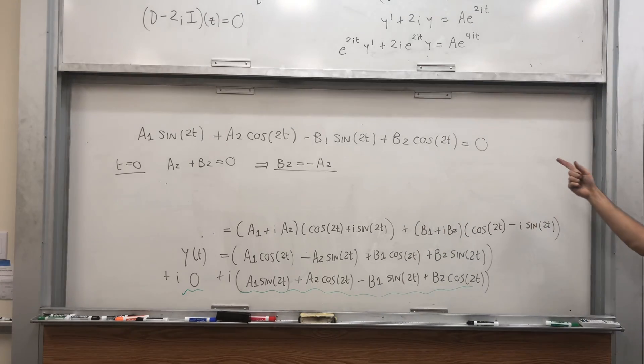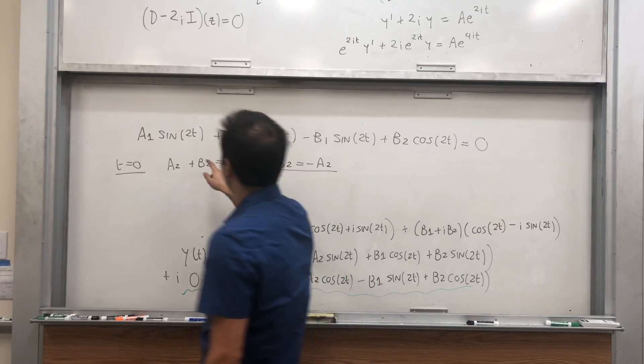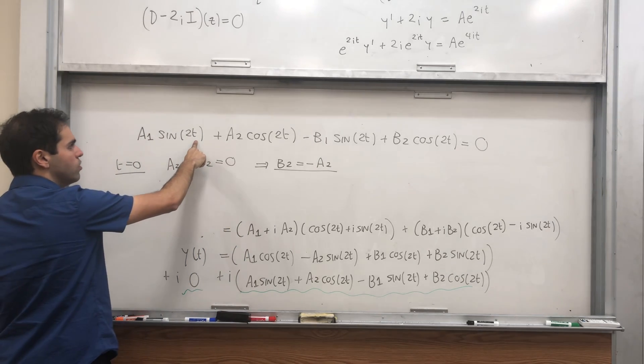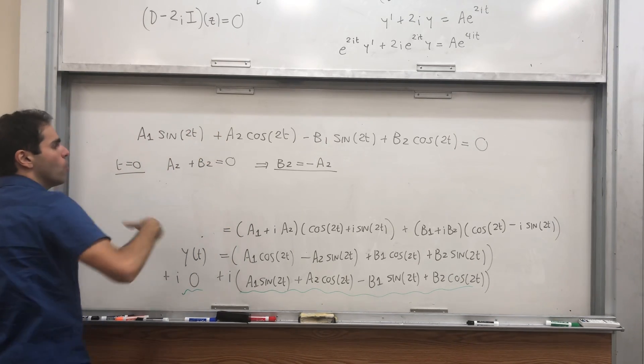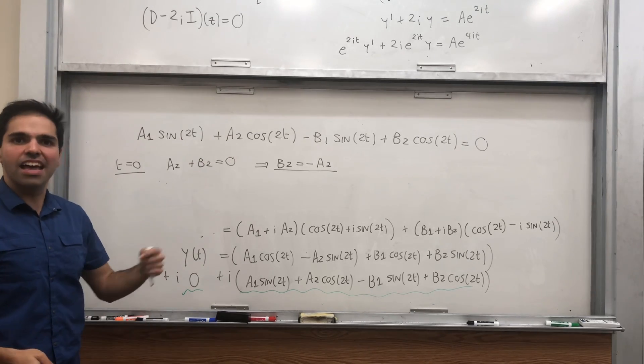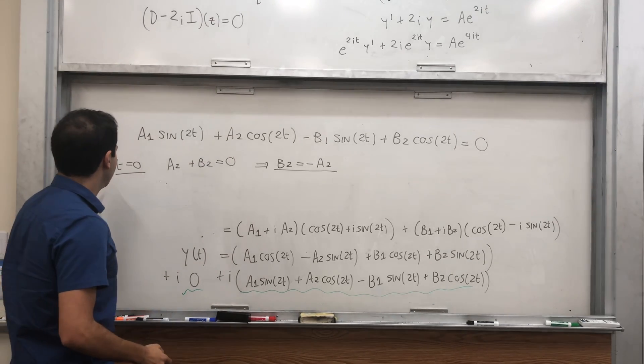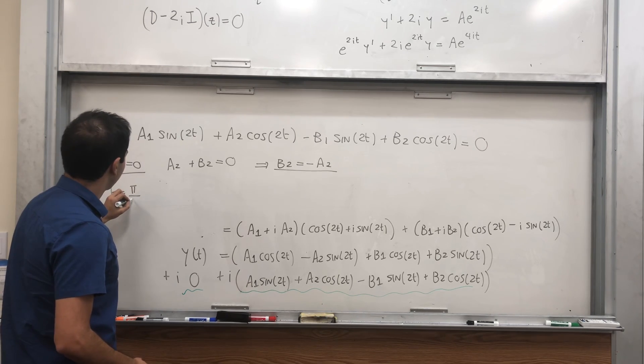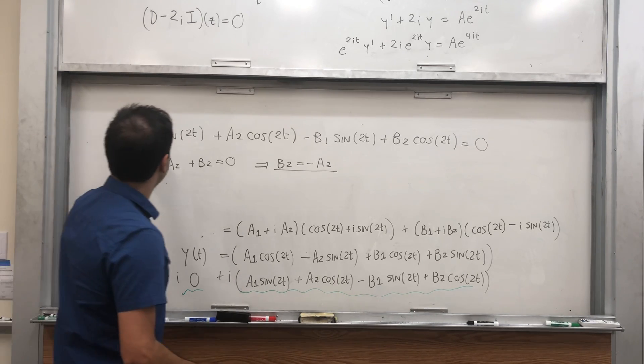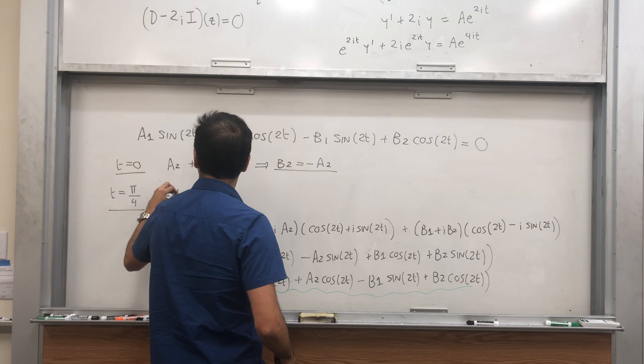And then for the second part, there are two ways of doing it. Either plug in t equals pi over 4, or differentiate and set t equals 0. But let's do it the other way, pi over 4. Then what do we get? a1 times 1, which is a1.